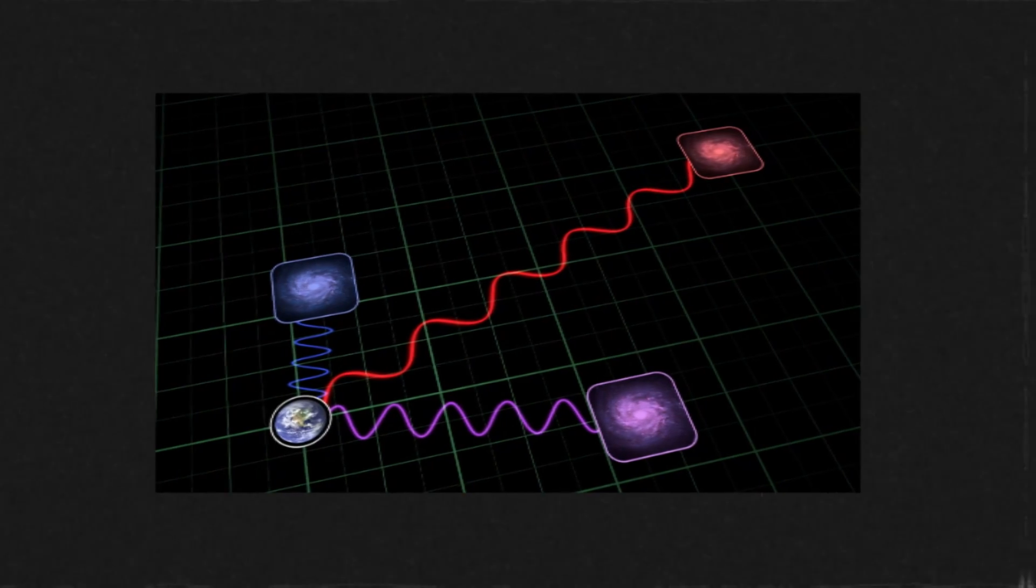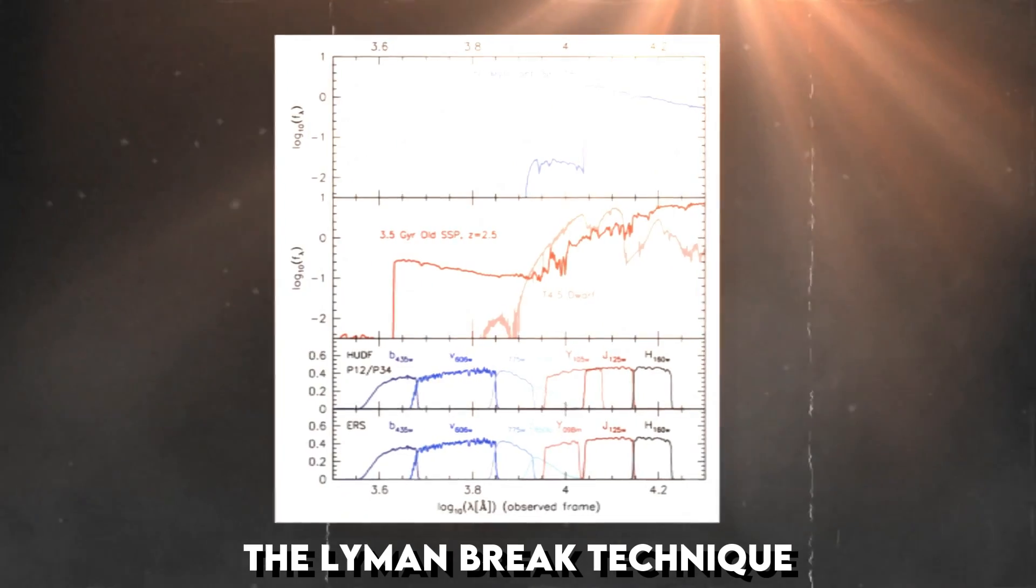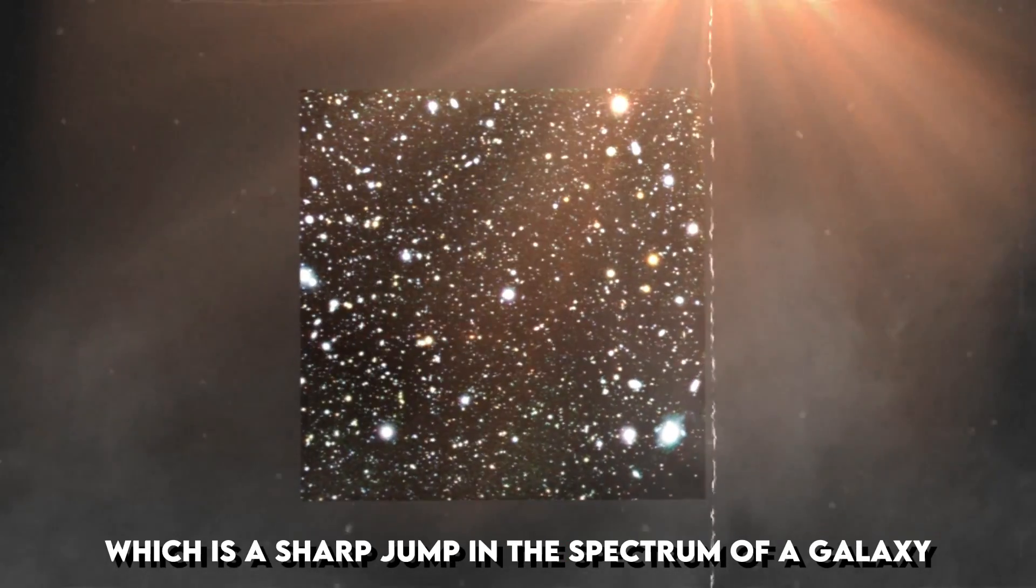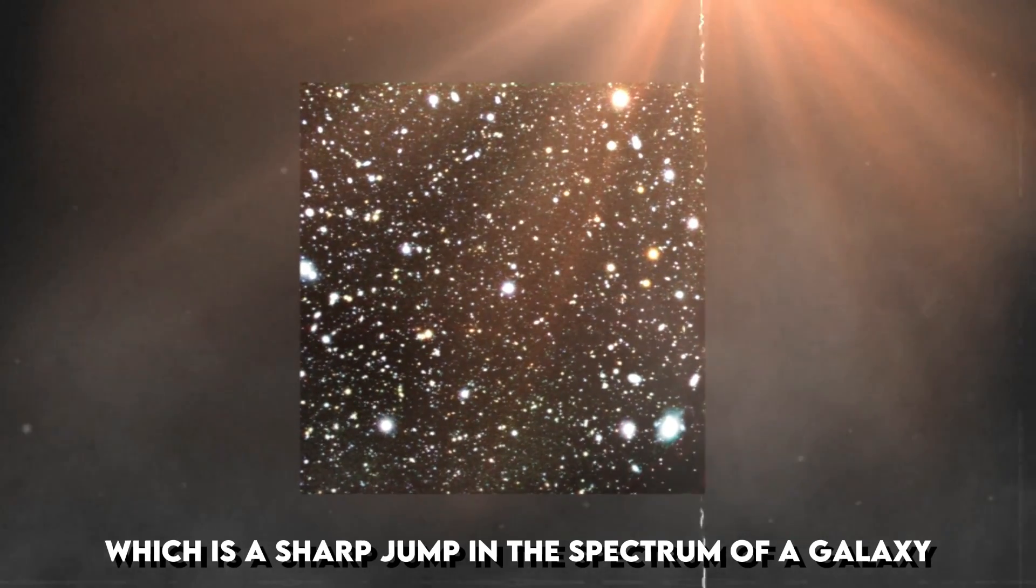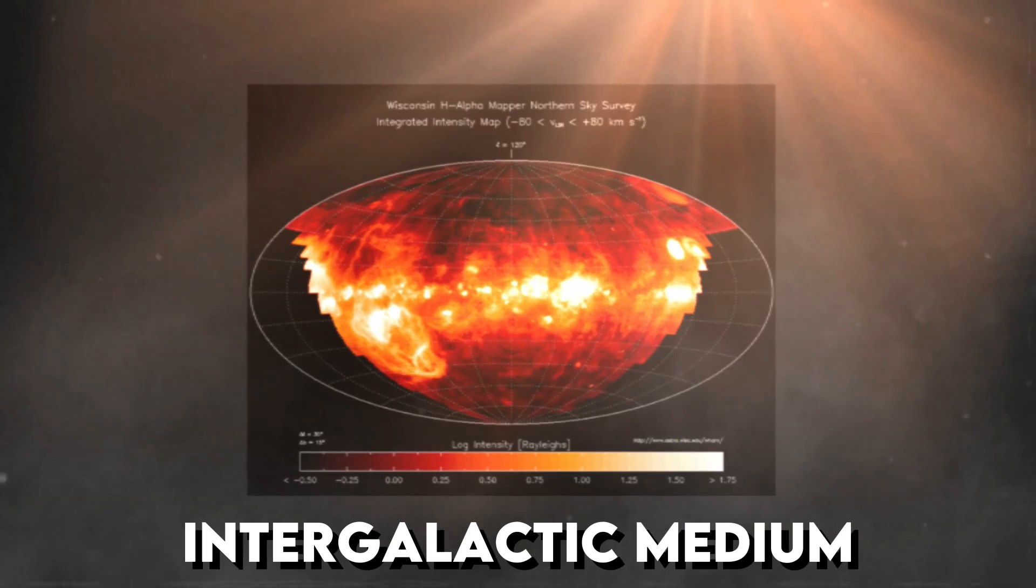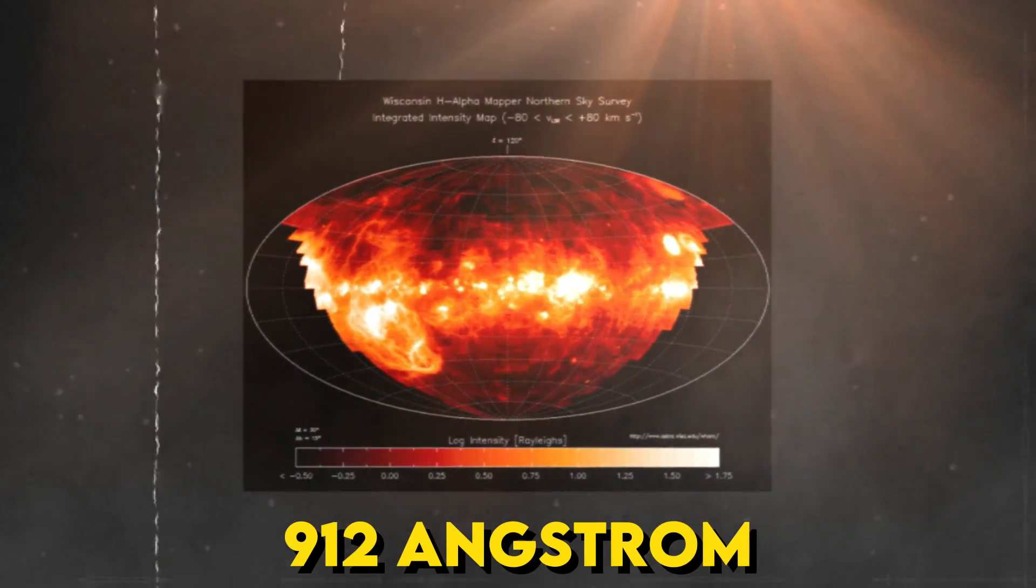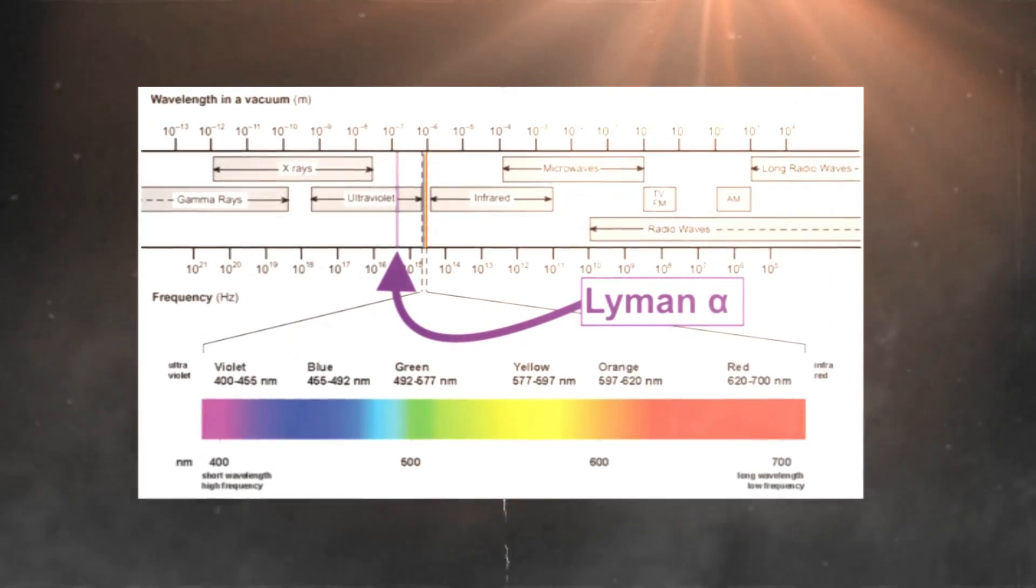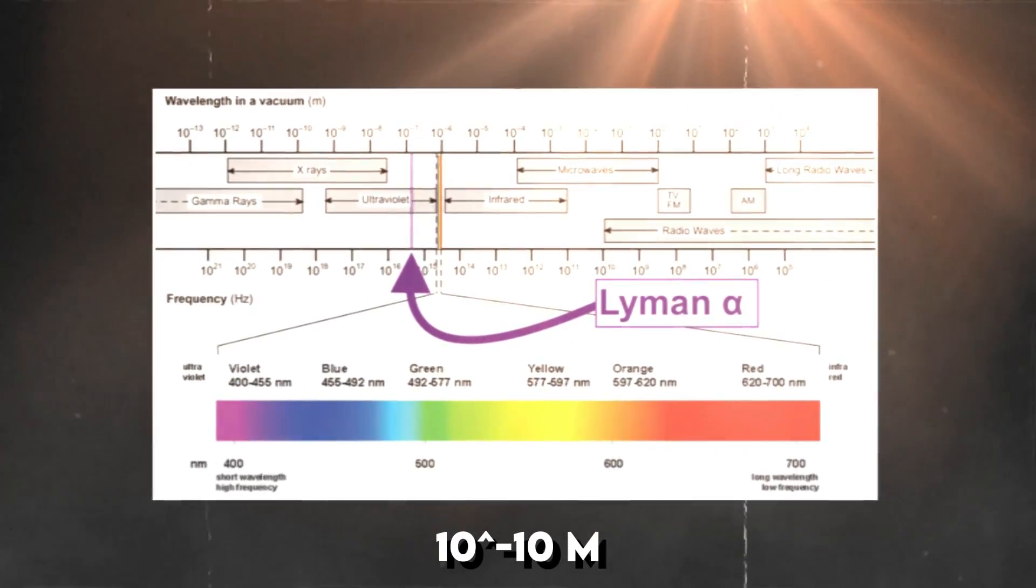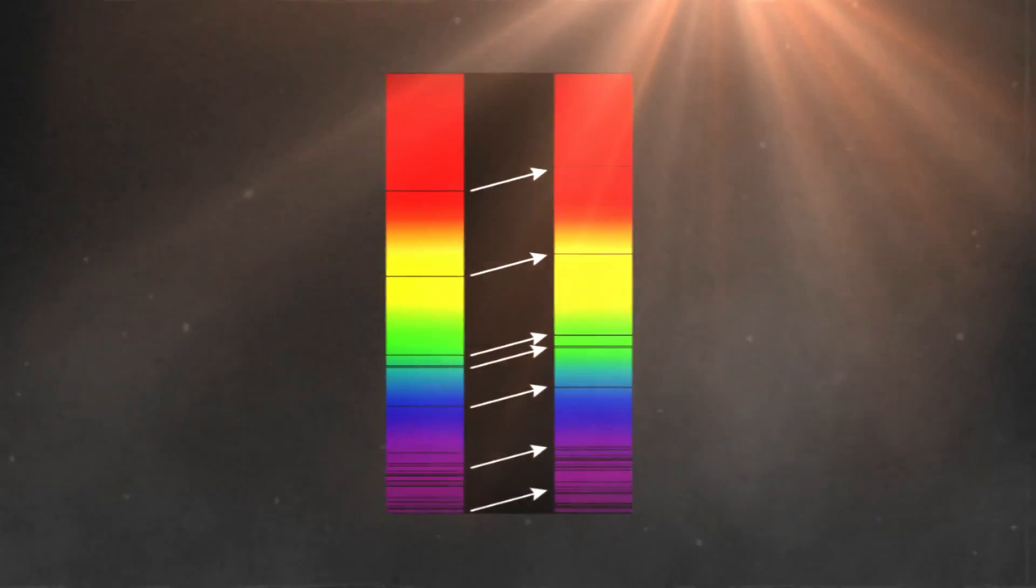The Lyman-Break technique was used to find high-redshift galaxies, which is a sharp jump in the spectrum of a galaxy caused by hydrogen in the intergalactic medium absorbing light with wavelengths shorter than 912 angstroms, which is equal to 100 millionth of a centimeter, or 10 to the power of minus 10 meter. This imprint on the spectrum is redshifted as it travels towards us, making it visible in the infrared range of the spectrum.